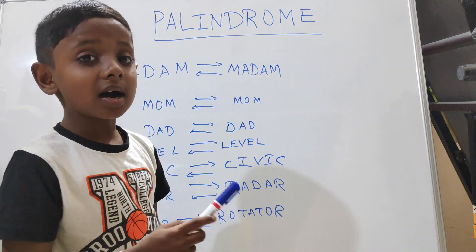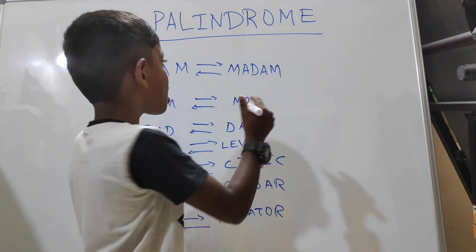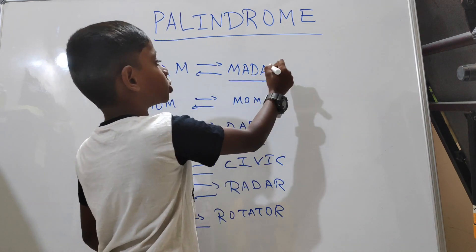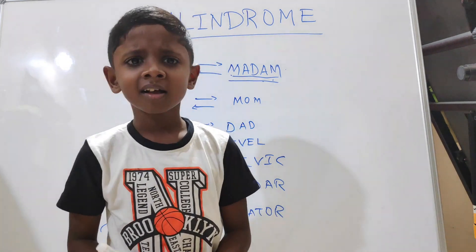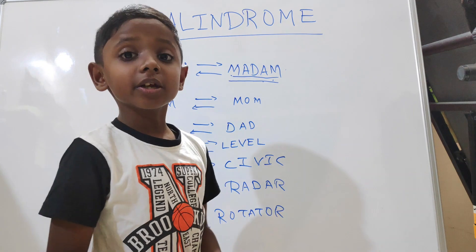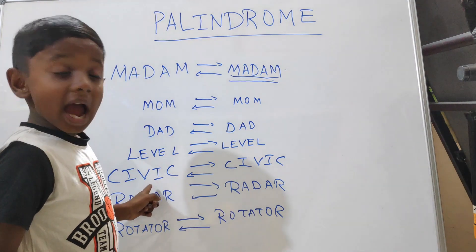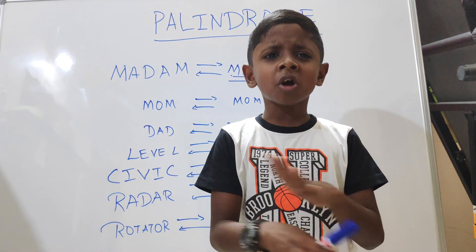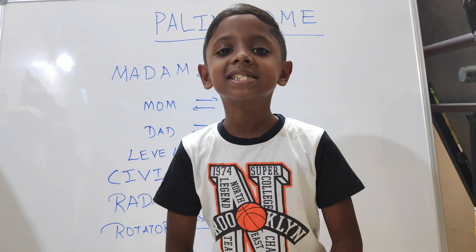Let's see a few examples of palindrome words. Madam — M-A-D-A-M — we can read it from either direction and it's the same. Mom, Dad, Level, Civic, Radar, and Rotator — these are all called palindrome words. These are just a few examples, but we have more palindrome words in English.